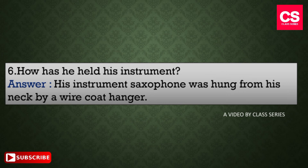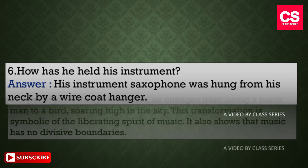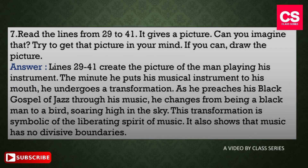Our seventh question is: read the lines from 29 to 41 — it gives a picture; can you imagine it and try to draw it? The answer: lines 29 to 41 create a picture of the man playing his instrument. The minute he puts his musical instrument to his mouth, he undergoes a transformation. As he preaches his Black gospel of jazz through his music, he changes from being a Black man to a bird soaring high in the sky. This transformation is symbolic of the liberating spirit of music, and it also shows that music has no divisive boundaries.